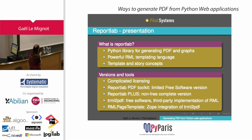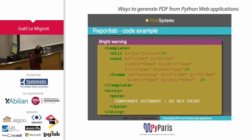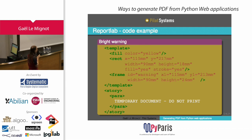For Zope users there is also a Zope integration. For example, one use case is describing something a customer required: adding a big flashy yellow box with a big black border saying 'this is a temporary document, do not print it' in the middle of a document.